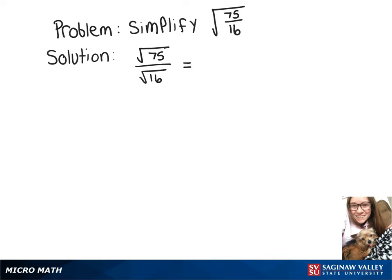Now we want to think about perfect squares that are multiples of 75. So let's do the square root of 25 times 3, and of course we know the square root of 16 is 4.